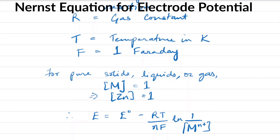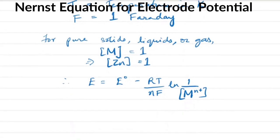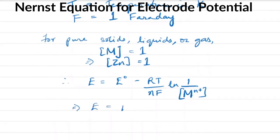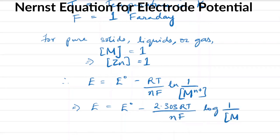Converting to base-10 logarithm, we get: E = E° − (2.303 × RT/nF) log(1/[M^(n+)]).